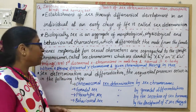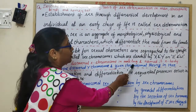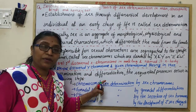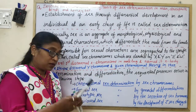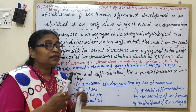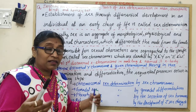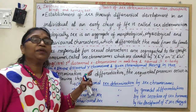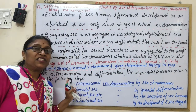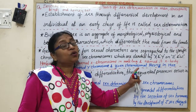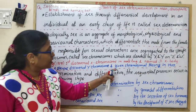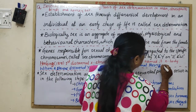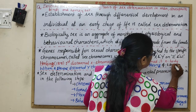Henking in 1891 first discovered the X chromosome in male bugs and named it X body. Then Wilson and Stevens discovered the Y chromosome, and they named the two sex chromosomes as X and Y, and the remaining chromosomes as autosomes. They gave the chromosomal theory of sex determination in 1905.